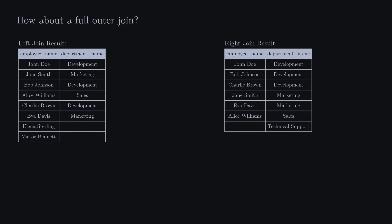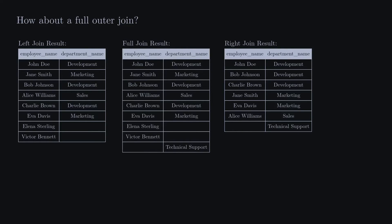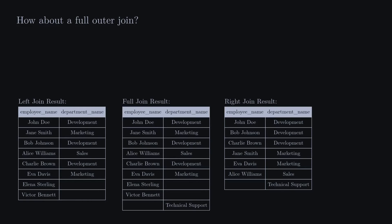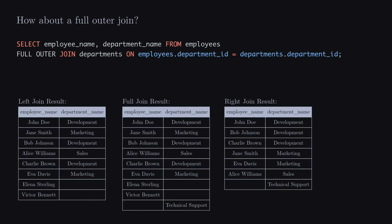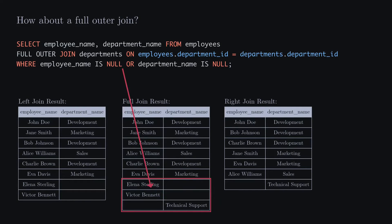A full outer join is a combination of a left join and a right join. When there is no matching row for a row in the first table, a row is added with the data from the first table and null for the fields in the second table. Likewise, when there is no matching row for a row in the second table, a row is added with the data from the second table and null for the fields in the first. The SQL query for a full outer join is given as shown. To get all employees without a department and departments without employees, we restrict to where the employee name is null or the department name is null. Using this data, we can assign three employees to empty departments.